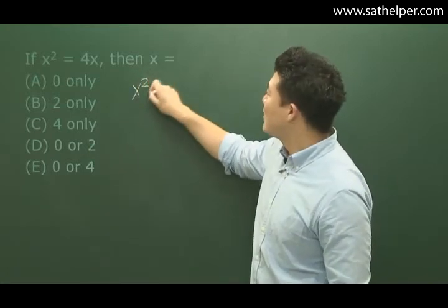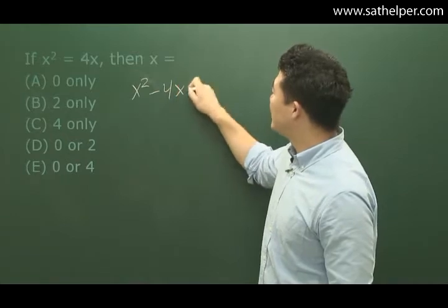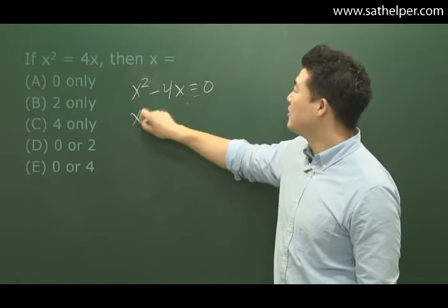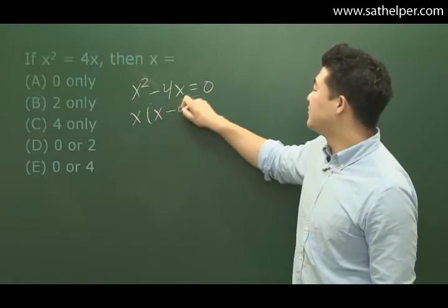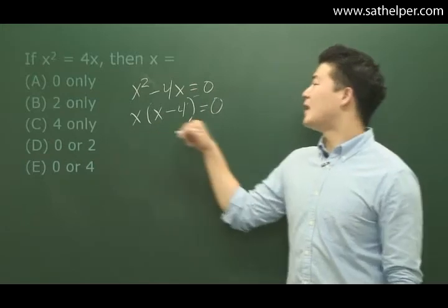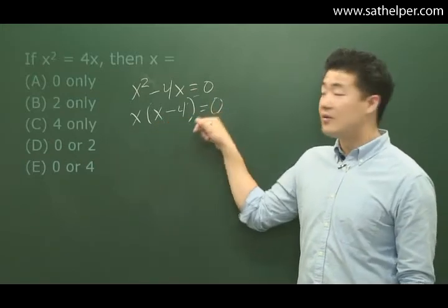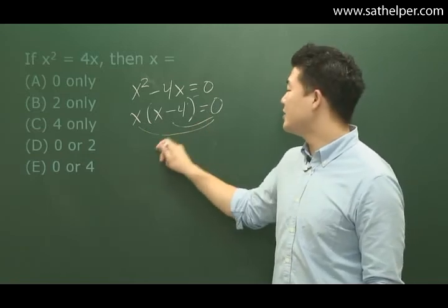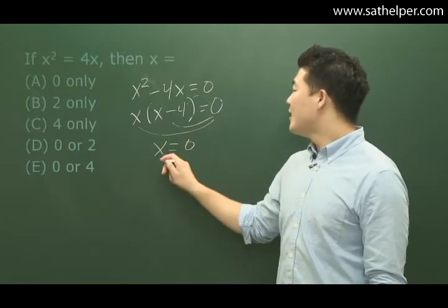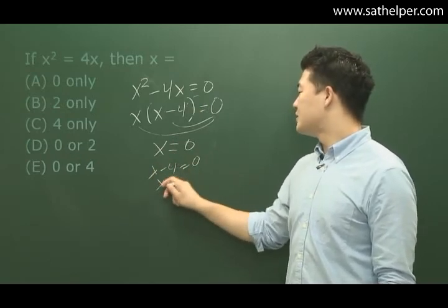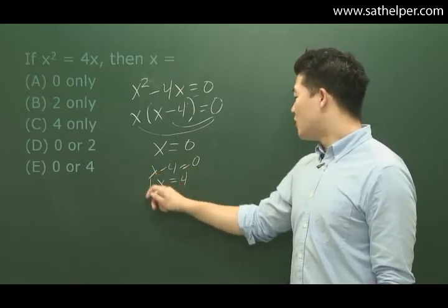If we move 4x to this side, we get x² - 4x = 0. We can factor out the x, giving us x(x - 4) = 0. This means we can set each factor equal to 0. So x = 0, or x - 4 = 0. Solving the second equation, we get x = 4. So our two solutions...